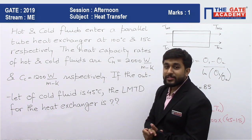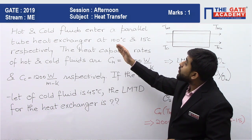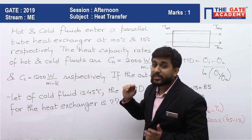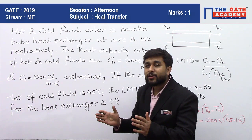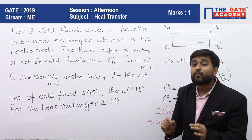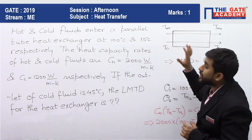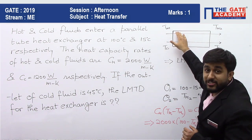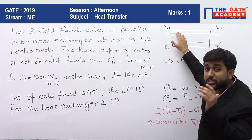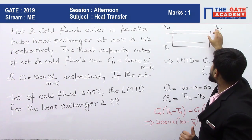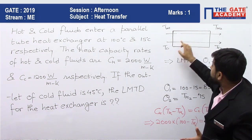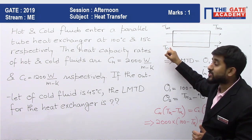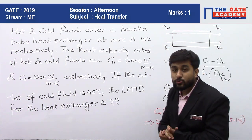The question is very simple. It says hot and cold fluids enter a parallel tube heat exchanger — so basically there is a heat exchanger in which the flow of hot and cold fluid is parallel. Let me represent it: the hot fluid enters at temperature TH1 and exits at TH2; parallel to it a cold fluid flows with inlet temperature TC1 and outlet temperature TC2.